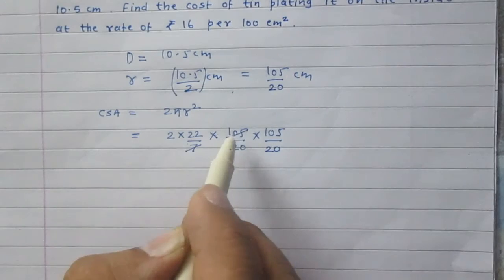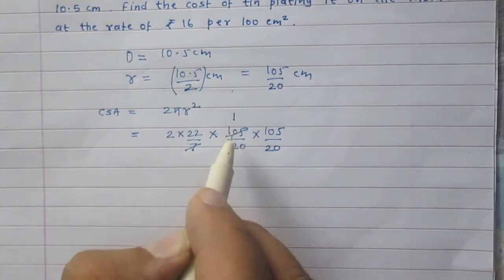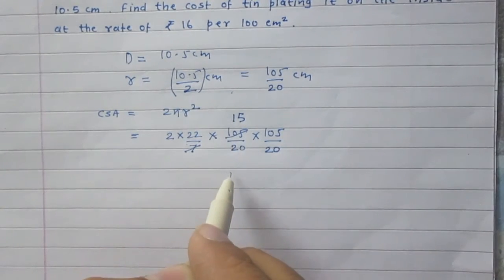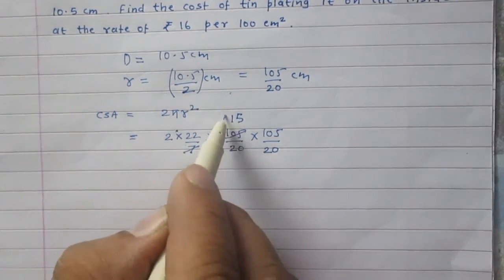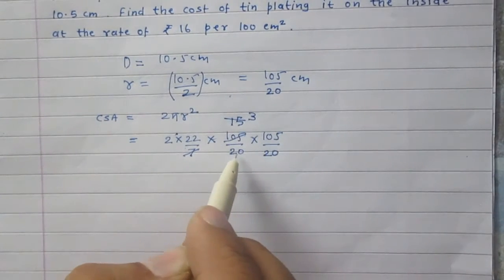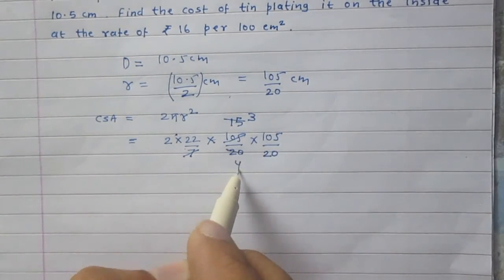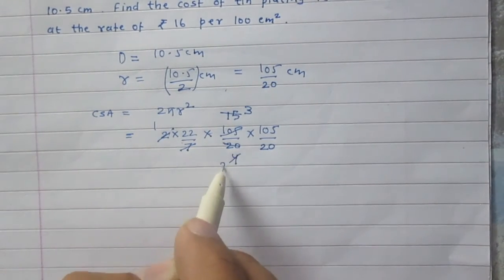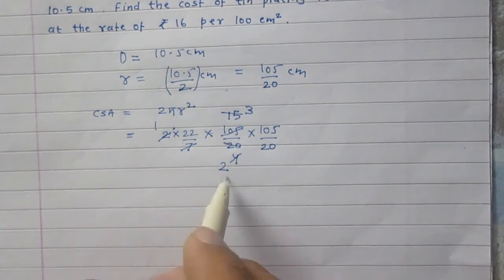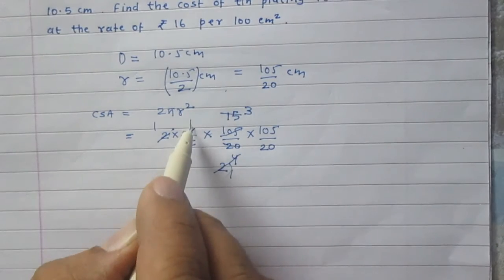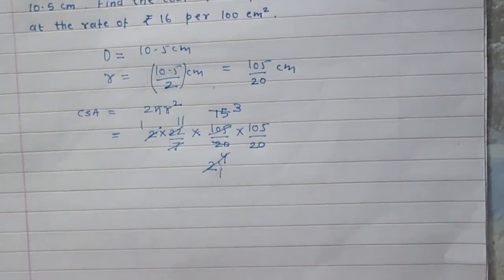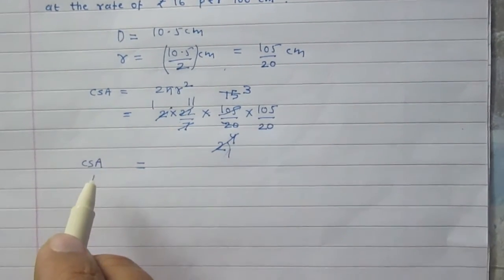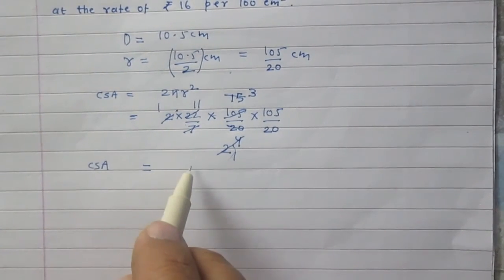7 is a factor of 105, giving us 15. We can cancel the 7s. You can reduce 15 and 20 as 3 and 4. Then reduce 2 and 4. So you will get the curved surface area, or inner curved surface area of the ball, as 11 × 3 × 105/20 centimeter square.